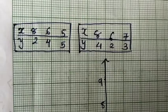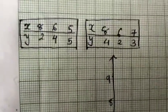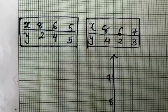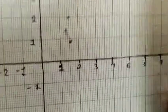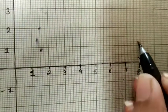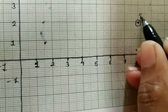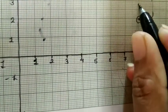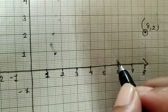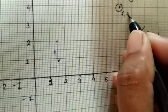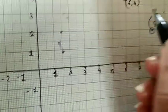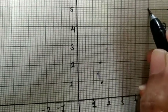We have to plot these points on the graph. For equation 1: x = 8, y = 2 — we plot the point (8, 2) here. Then (6, 4): 6 on x-axis and 4 on y-axis. And the third point is (5, 5): 5 on x-axis and 5 on y-axis, coming over here.